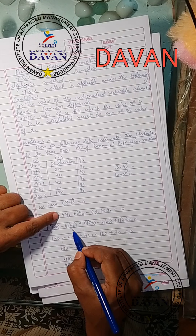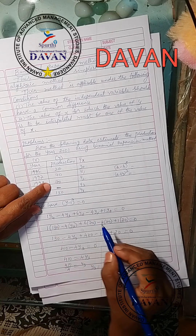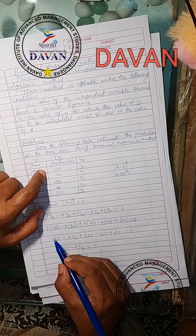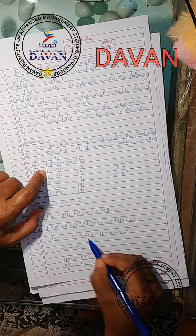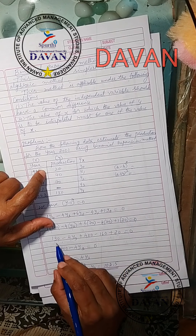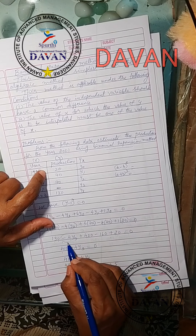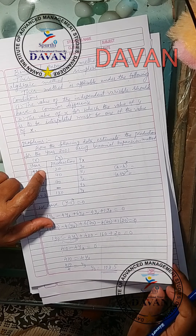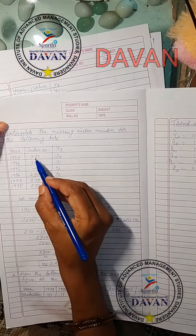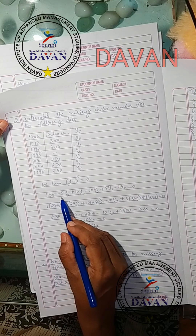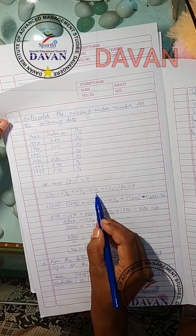Here, (y minus 1) to the power of 4 equals 0, giving: 1·y4 minus 4·y3 plus 6·y2 minus 4·y1 plus 1·y0 equals 0. Substituting: 1 into 130 minus 4·y3 plus 6 into 70 minus 4 into 40 plus 1 into 20 equals 0. That gives 130 minus 4y3 plus 420 minus 160 plus 20 equals 0. Simplifying: 410 minus 4y3 equals 0, so 4y3 equals 410, giving y3 equals 102.5.